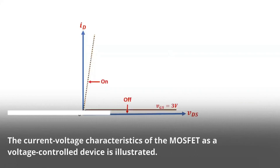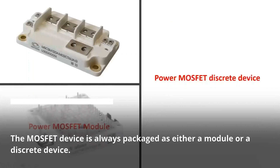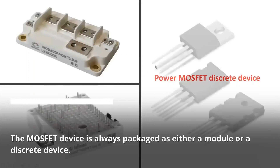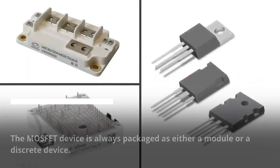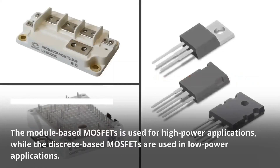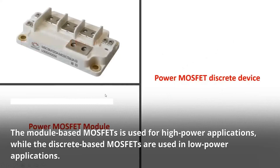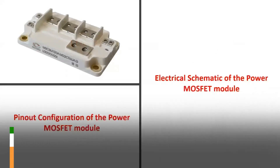The current-voltage characteristics of the MOSFET — a voltage MOSFET device — is always packaged as either a module or a discrete device. The module-based MOSFETs are used for high-power applications, while the discrete-based MOSFETs are used in low-power applications.